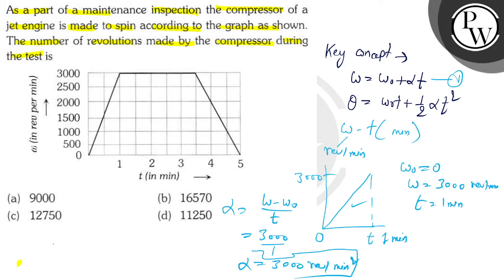The revolution made during this time, this is the revolution, that is omega naught t plus half alpha t square. Because omega naught value is 0, this term is 0. And here half alpha t value is 3000, and time is 1 into 1. So here theta value is 1500 revolutions. So this is the part first.